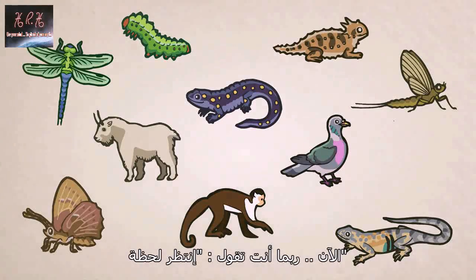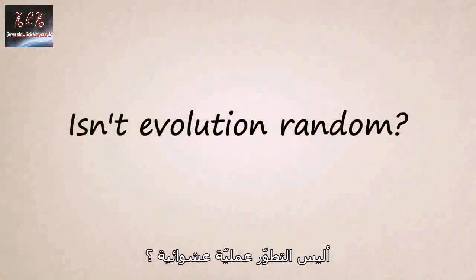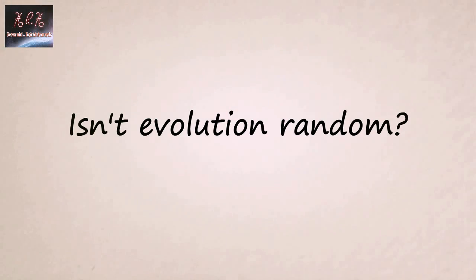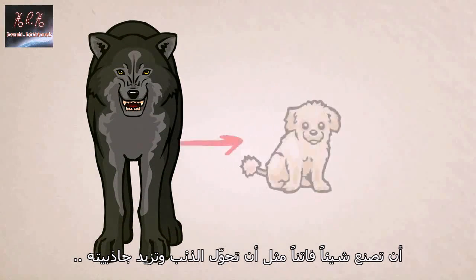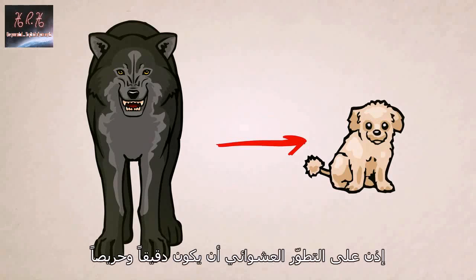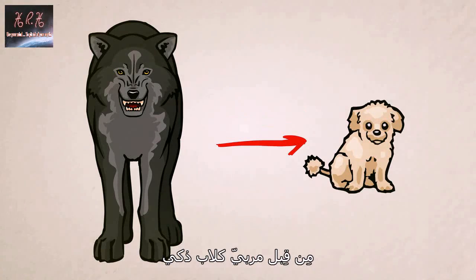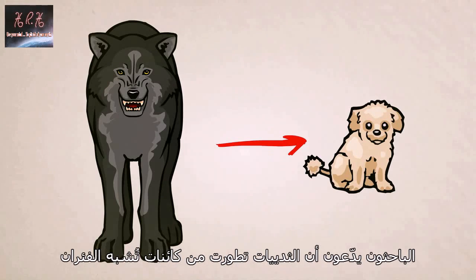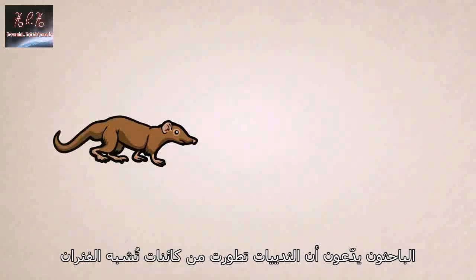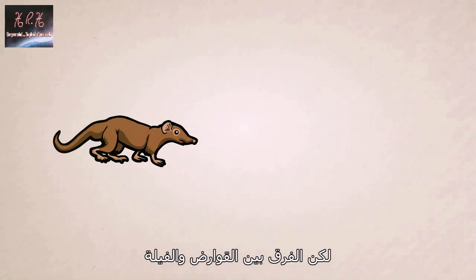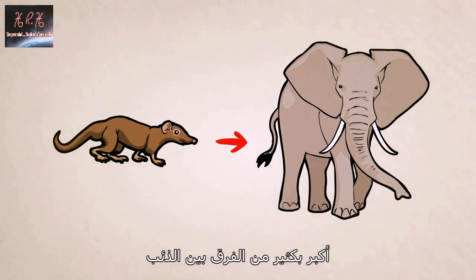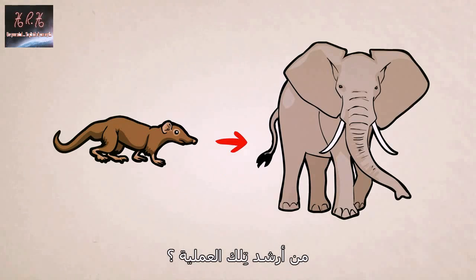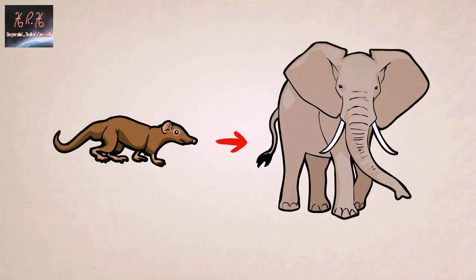Now, you might be saying: wait a minute — isn't evolution random? To do something functional like turn a wolf into an adorable mini poodle, random evolution had to be carefully guided by an intelligent dog breeder. Researchers claim that all mammals evolved from an ancient shrew-like creature, but the difference between a shrew and an elephant is far greater than that of a wolf and a poodle. Who guided that process? Who was the breeder?